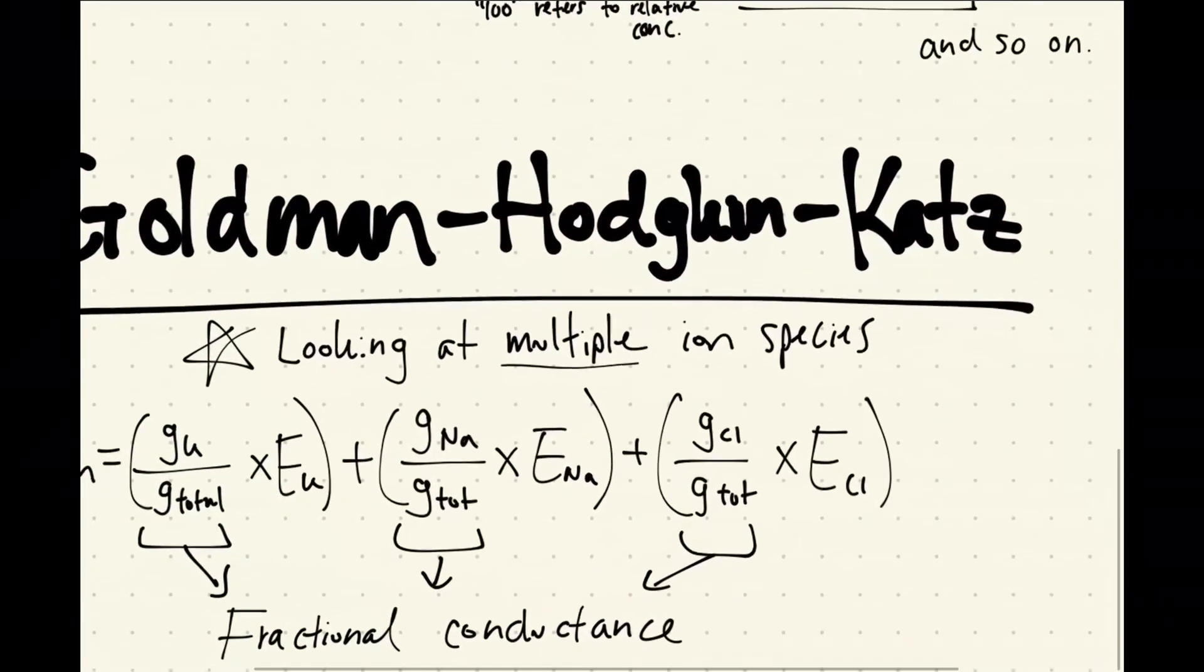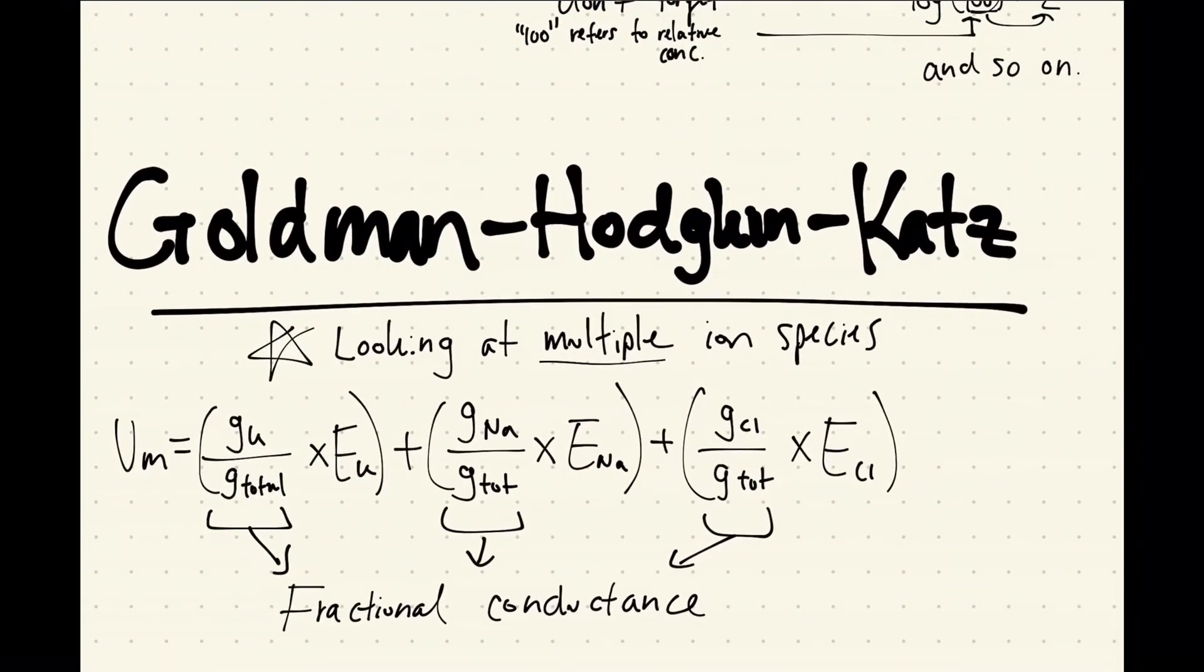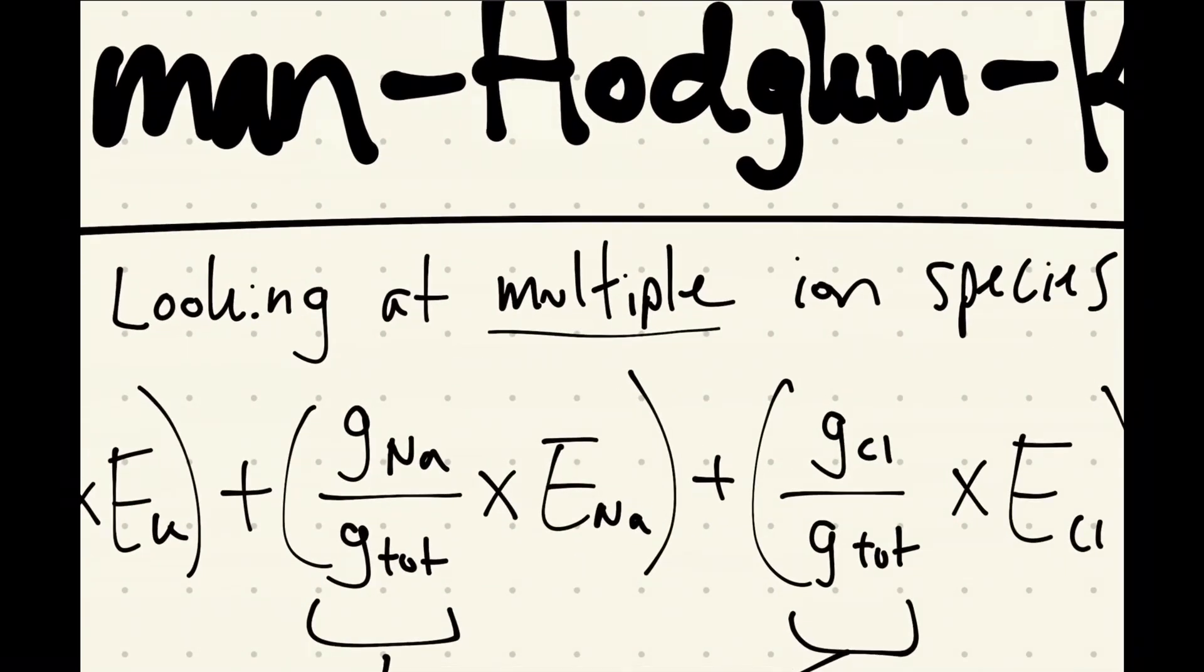I'm going to talk about the Goldman-Hodgkin-Katz equation real quick. This is essentially the Nernst equation, but looking at multiple different ion species.